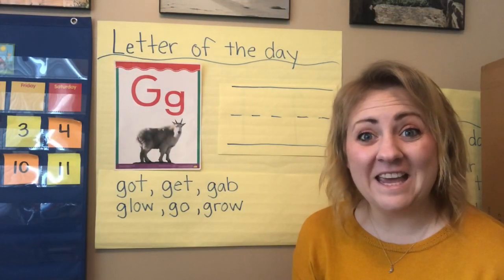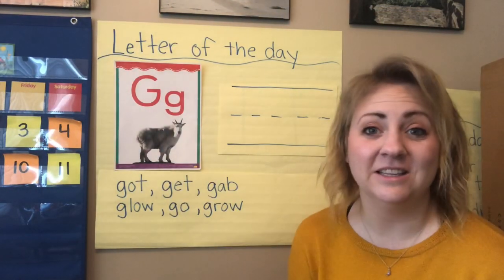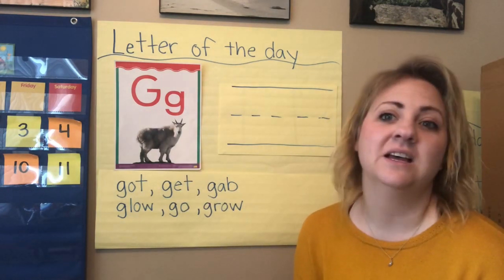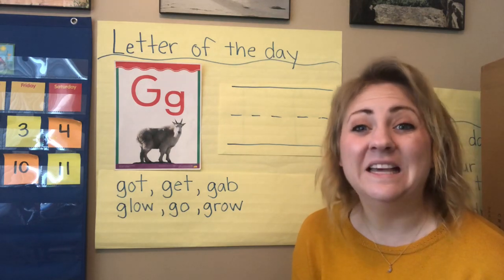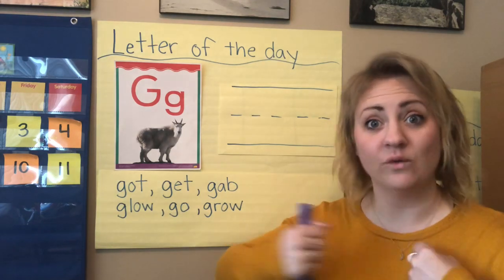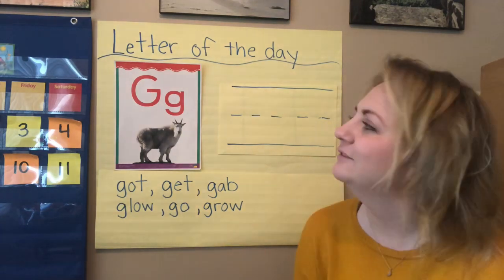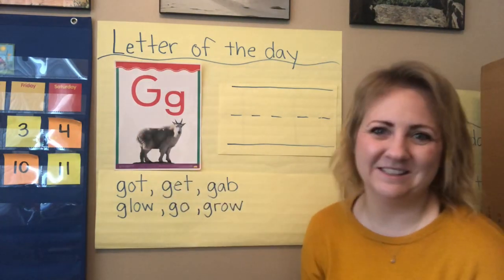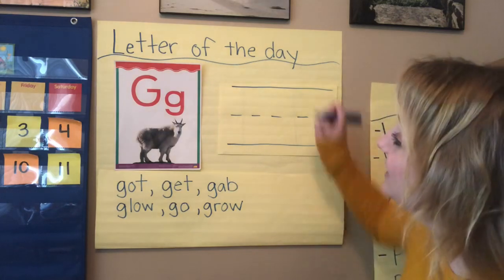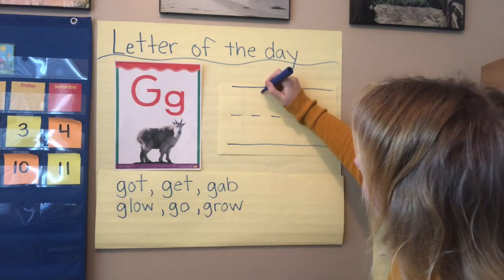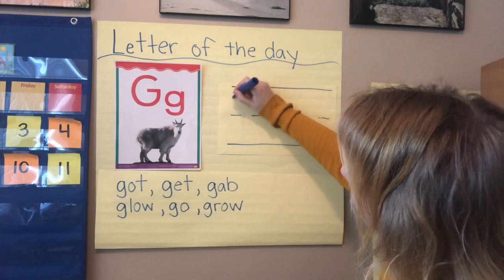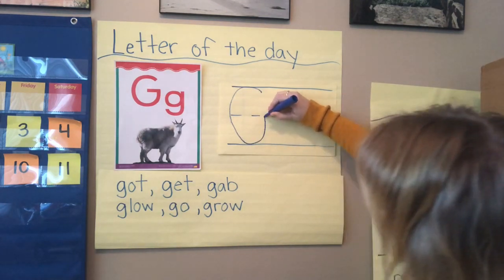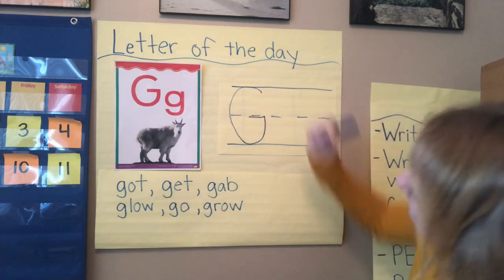Our letter today is the letter G. It's G-G-G for goat — that's the sound that it makes. Letter G makes the sound G. It also is like gorilla. We're going to write our letter G. We're going to start with our uppercase G. We start at the top line, make a big curve all the way to the bottom line, back to the middle line, and then you do a little line in. Awesome.